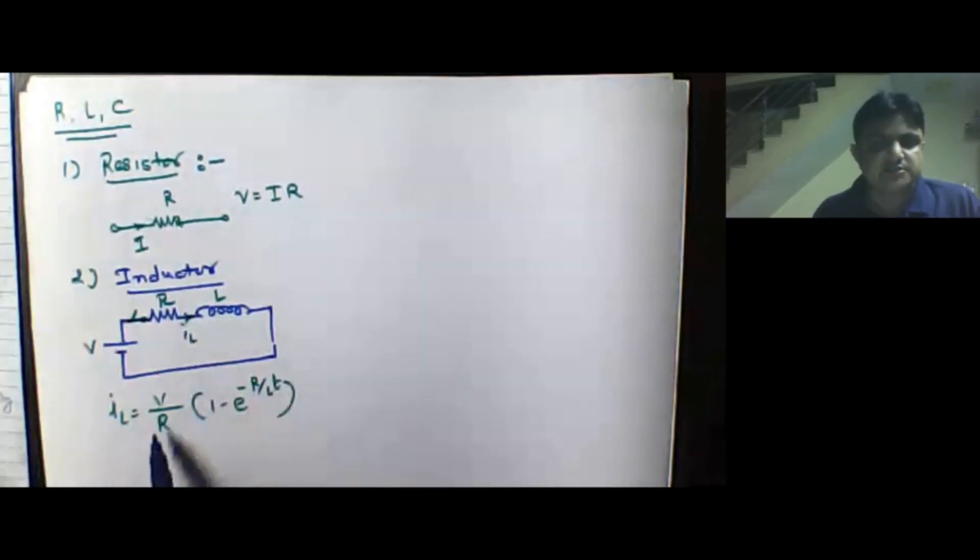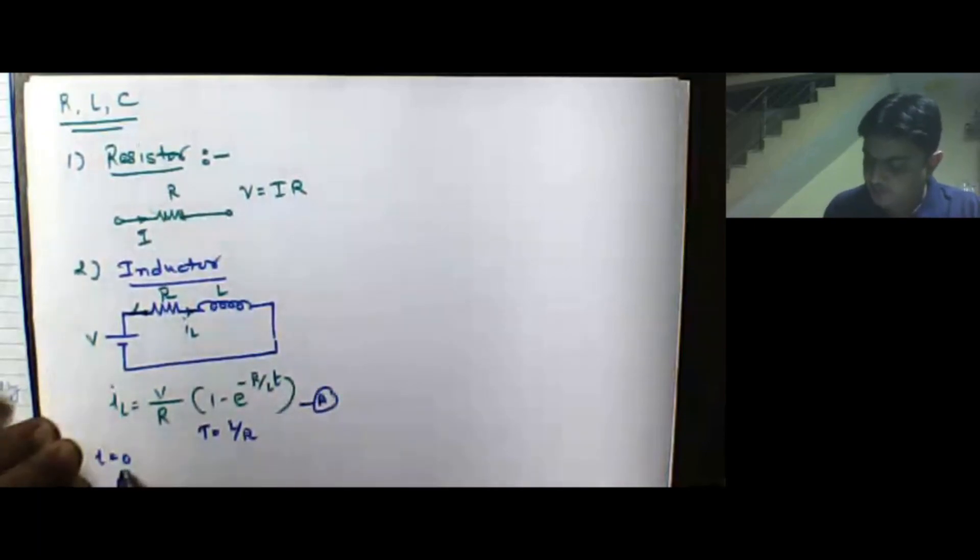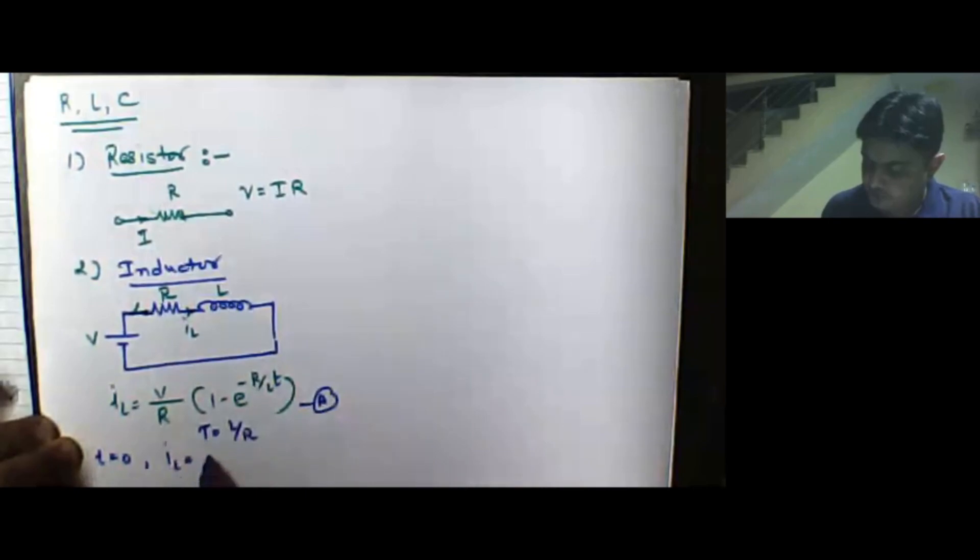You may have studied this expression in your basic electrical class, and possibly when we study Laplace transform we will derive this equation. Right now we assume that IL, the current flowing through this inductor, equals V/R × (1 − e^(−R/L × t)), where tau = L/R is the time constant. If I will put T equal to 0 in this expression, I will get e^0 = 1, so 1 − 1 = 0. So the current flowing through the inductor at T equal to 0 is equal to 0. This means that at T equal to 0, current flowing through inductor is zero.